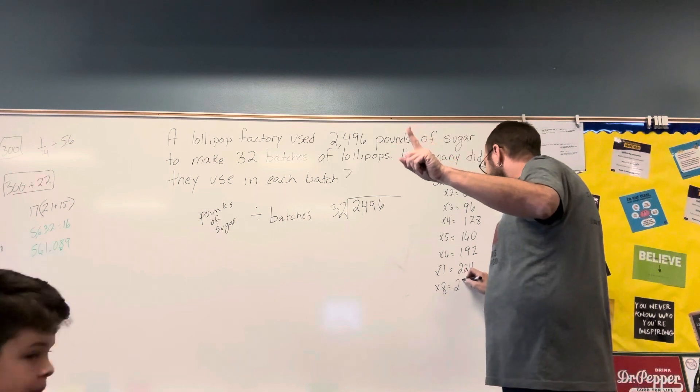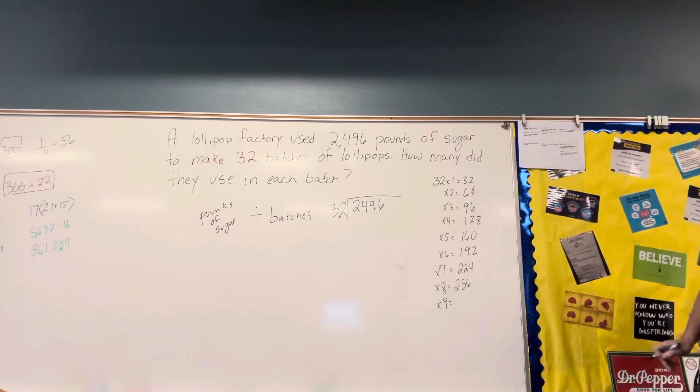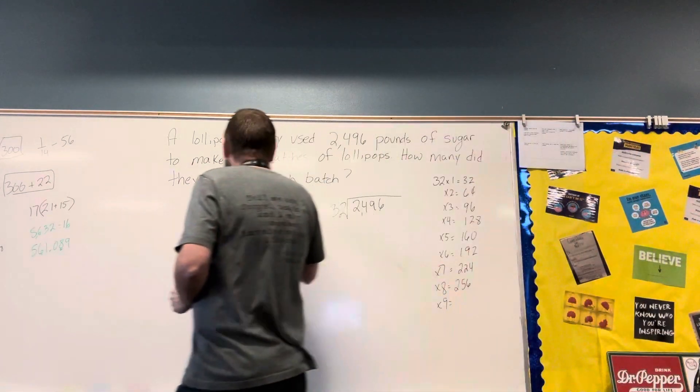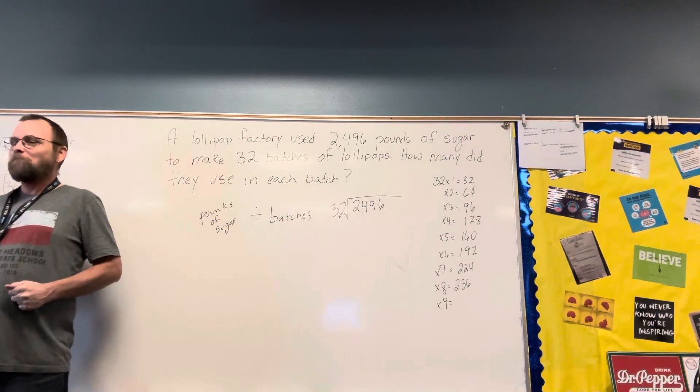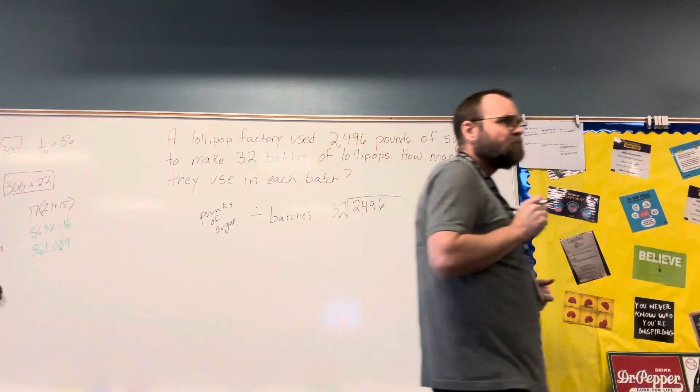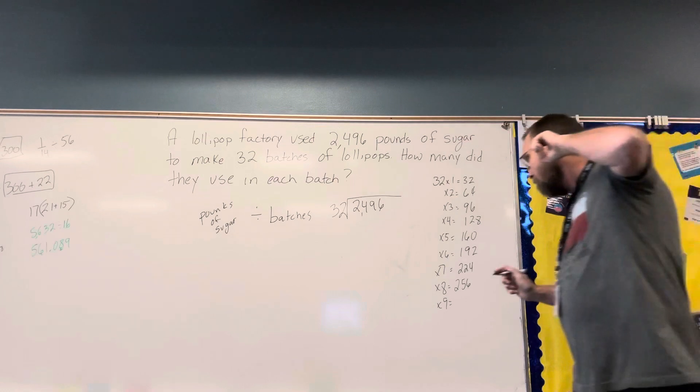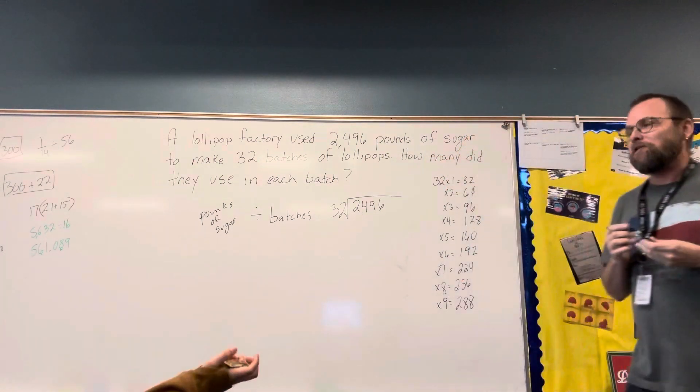Now say the next one because Ms. Dossie always feels left out. So Ms. Dossie, what I'm going to do is I'm going to ask you what 32 times 9 is. 288. All right, so we got 288.